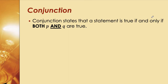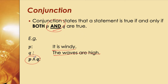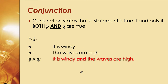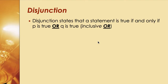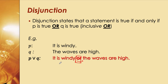Conjunction uses 'and.' A conjunctive statement is true if and only if both p and q are true. For example, p = 'It is windy,' q = 'The waves are high.' So p ∧ q reads: 'It is windy and the waves are high.' For disjunction, using 'or,' the statement is true if p is true or q is true (inclusive or). So p ∨ q reads: 'It is windy or the waves are high.'